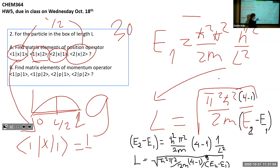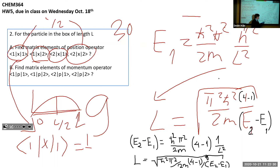If you solve for the length L, there will be a square root involving (four minus one). This energy difference is what one is getting in the task of the homework. If you see an attempt to solve for L, give full credit even if the numbers look strange. If you do not see the final equation but see that someone is trying to evaluate the energy of the first and second states and the transition between them, give partial credit and try to be as generous as possible.